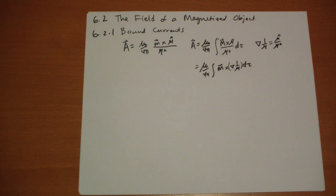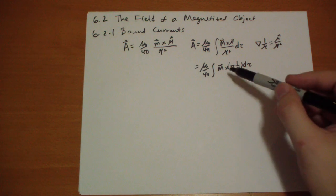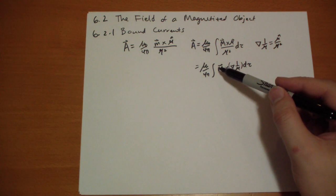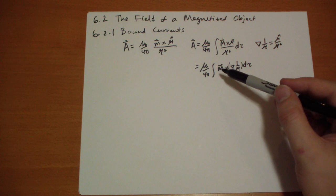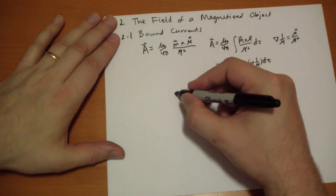Now, if we use product rule 7 to break this out into two different parts. So, product rule 7 says that the curl of a scalar field times a vector field is equal to the scalar field times the curl of the vector field minus the vector field cross the gradient of the scalar field. And so, we have the gradient of the scalar field here.